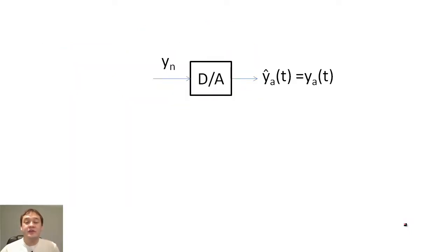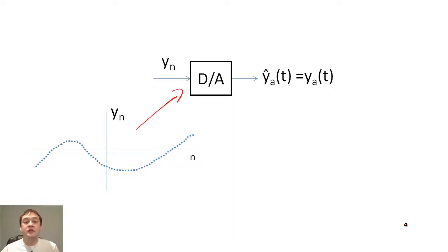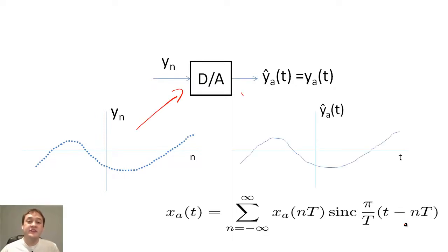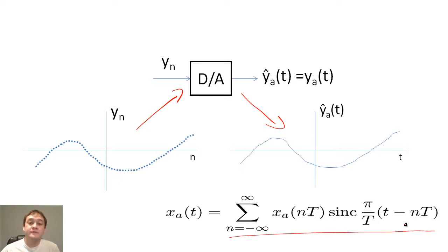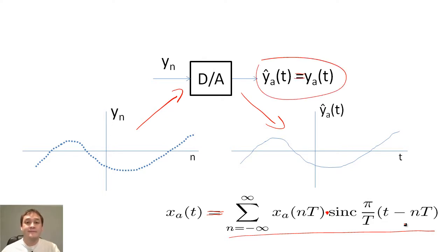Now let's return to the broad view of our filter example, where we will now send Y(N) to the D-to-A converter to recover Ŷ_A(T). We create Ŷ_A(T) by multiplying and adding Y(N) samples by sinc functions. If we sampled above the Nyquist frequency for X_A(T), Ŷ_A(T) should perfectly match the output of our analog filter, Y_A.